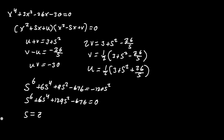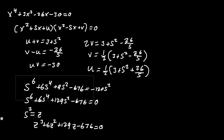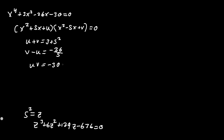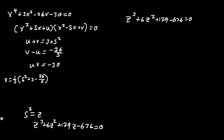Setting s² equal to z, we get the resolvent cubic: z³ plus 6z² plus 129z minus 676 equals 0. For reference, v equals one half times (s² plus 3 minus 26 over s) and u is the same with positive 26 over s.